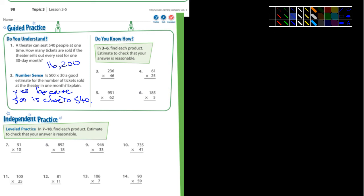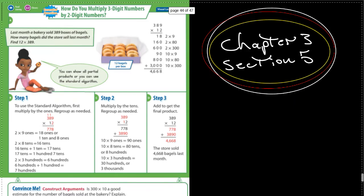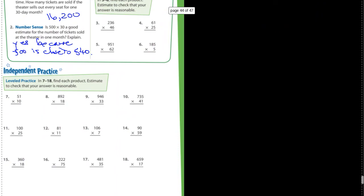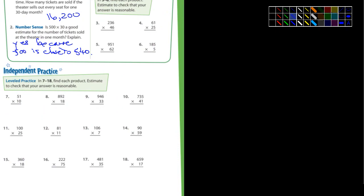All right. I think you can do three, four, five, six without too much trouble. Let me drop down a little bit further here. I'm going to look at number, number 16, number 16. So 222 times 75. Okay. You guys follow along.